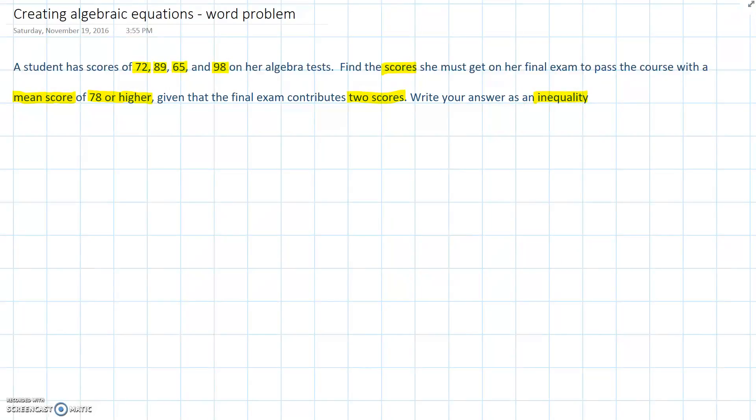So, the mean score overall, including the two results on the exam, has to be at least 78. We can use the formula for the mean of a set of values to calculate this. Notice, the mean is equal to the sum of all of the values over the number of values.